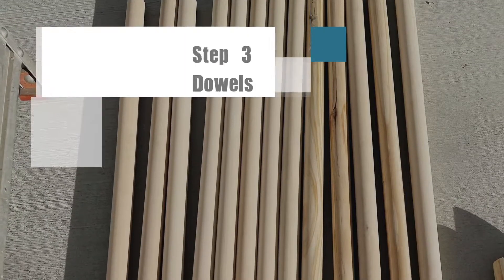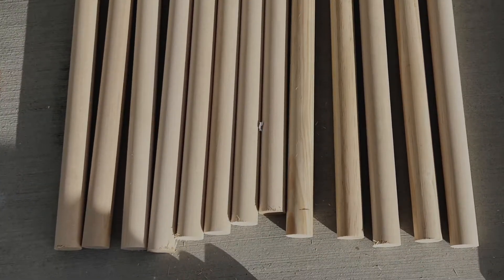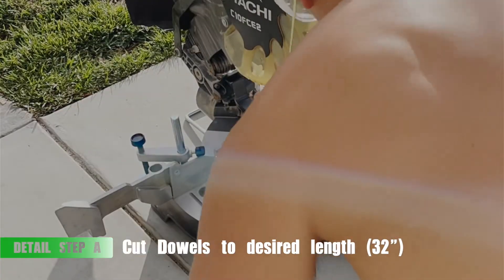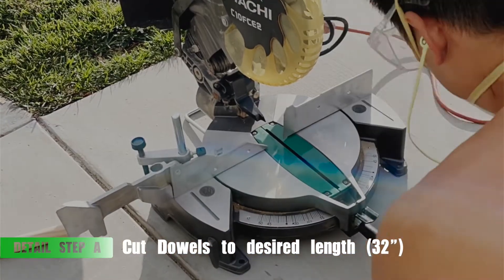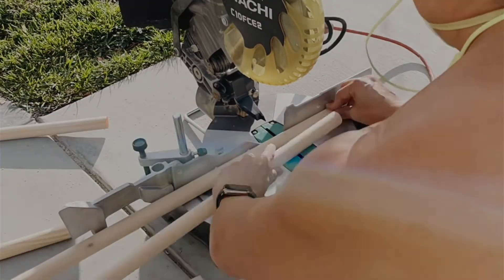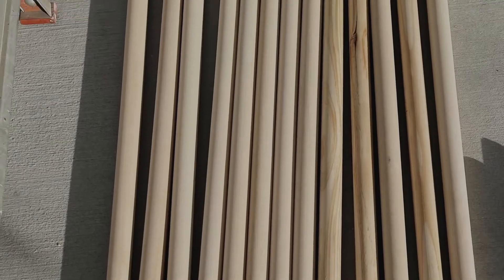The last component of the Pikler triangle is the dowels. Here, I actually ordered these from Amazon, which came in 36 inch lengths. I decided to shorten them to 32 inches because I wanted my Pikler triangle to take up less space in the house. And there you go, your 13 dowels for the Pikler triangle.